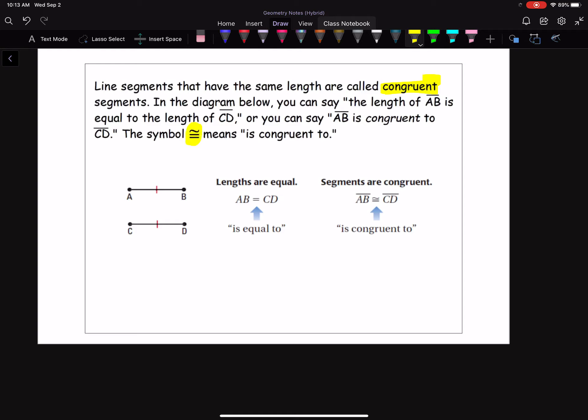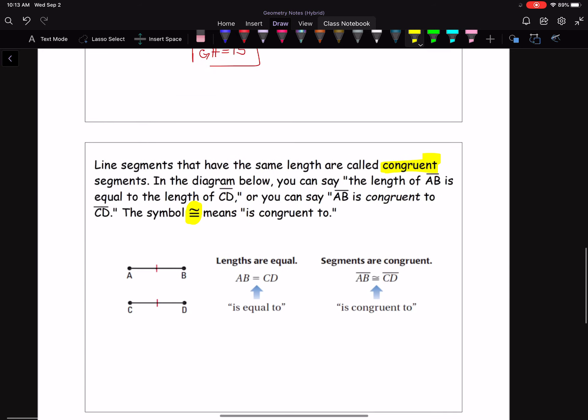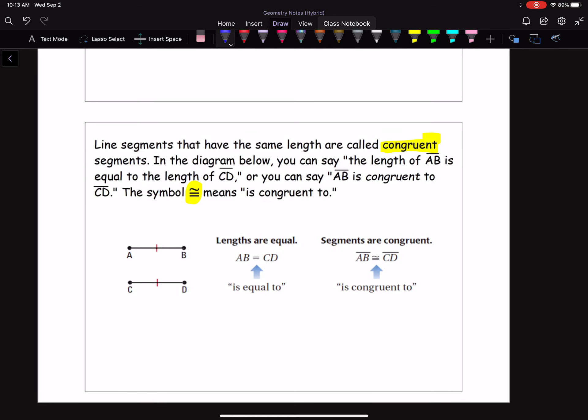And now here's the symbol. The congruent symbol is the equal sign with a little squiggly above it. So you can say either or. So AB is congruent to CD. And that's it for segment congruence. But let's take a look at one quick example.